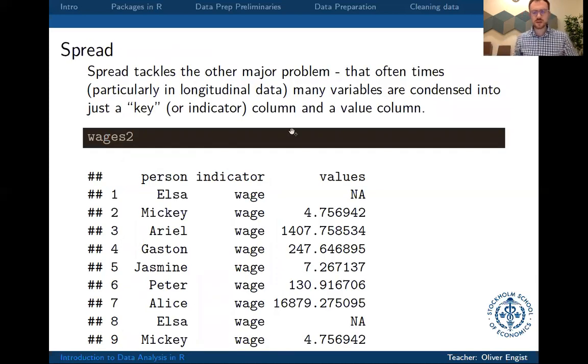And finally, oftentimes it also happens that basically instead of having separate columns you just essentially have all the data in one column but then you have an indicator that tells you what this value stands for.